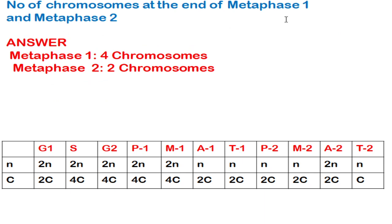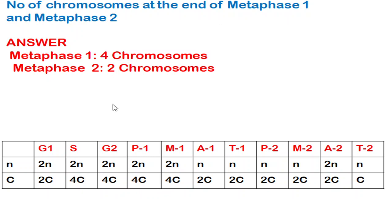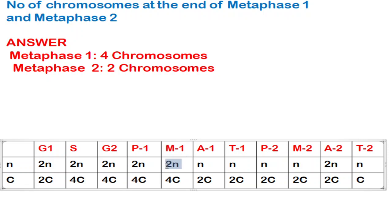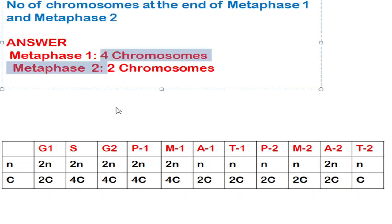The next question: what is the number of chromosomes at the end of metaphase 1 and metaphase 2 of meiosis? The correct answer is 4 chromosomes in metaphase 1 and 2 chromosomes in metaphase 2. In metaphase 1, total chromosomes are 2N; in metaphase 2, they are reduced because metaphase 1 involves separation of homologous chromosomes and meiosis 2 involves separation of sister chromatids. The correct option is 4, 2.